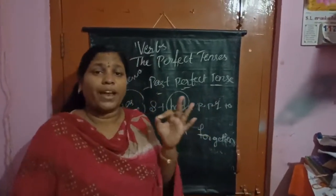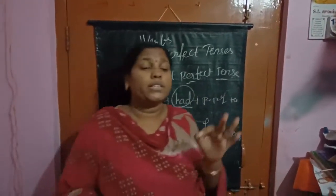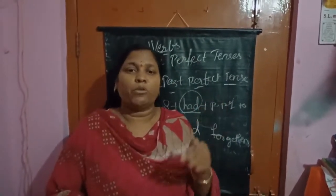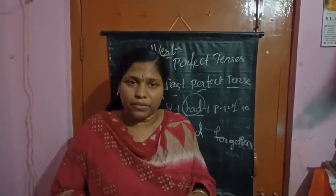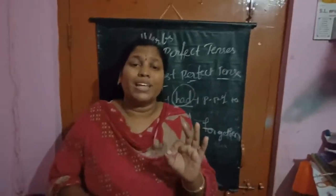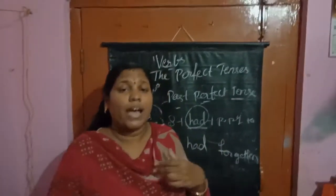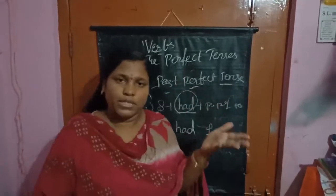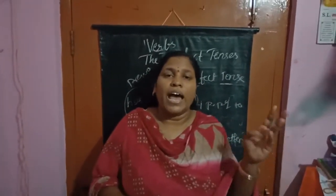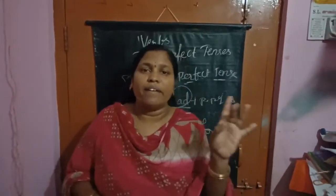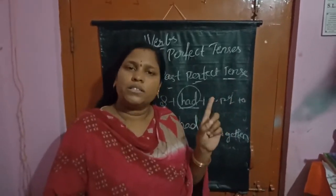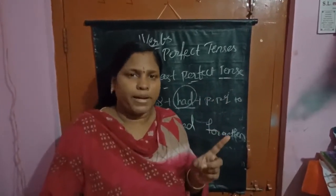Remember, children — the difference: 'had' means something was there before but now it is not, or from that time onwards you have it. 'Have' means I have it now. 'Has' is also the same. Has and have are used in the present form; had is used in the past perfect tense.